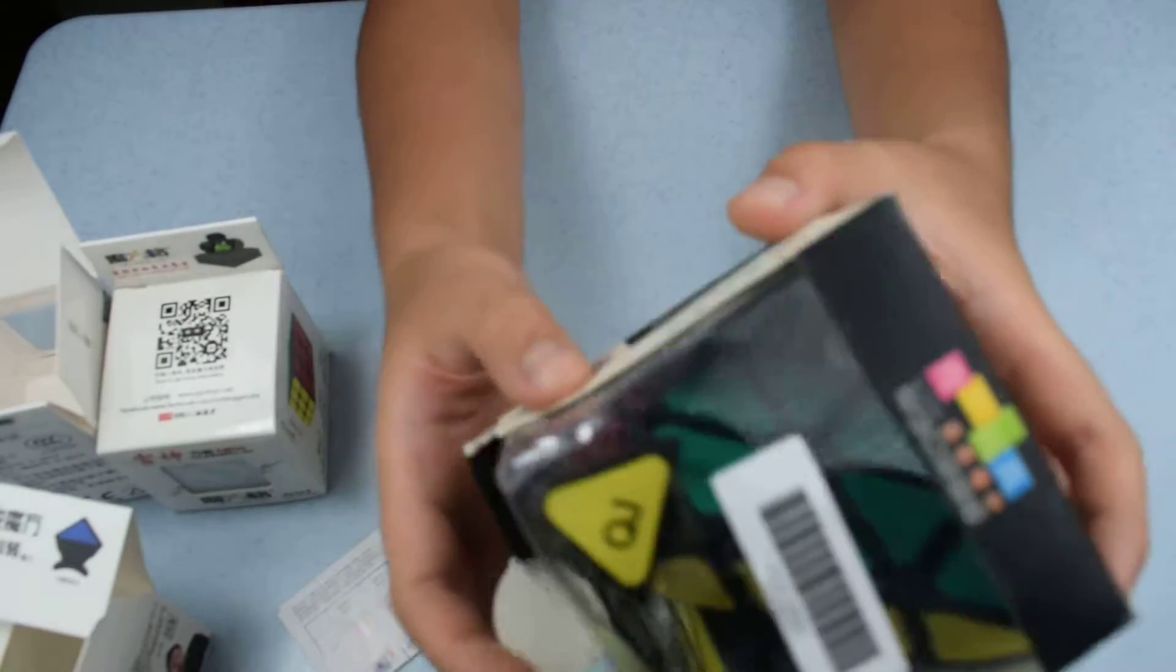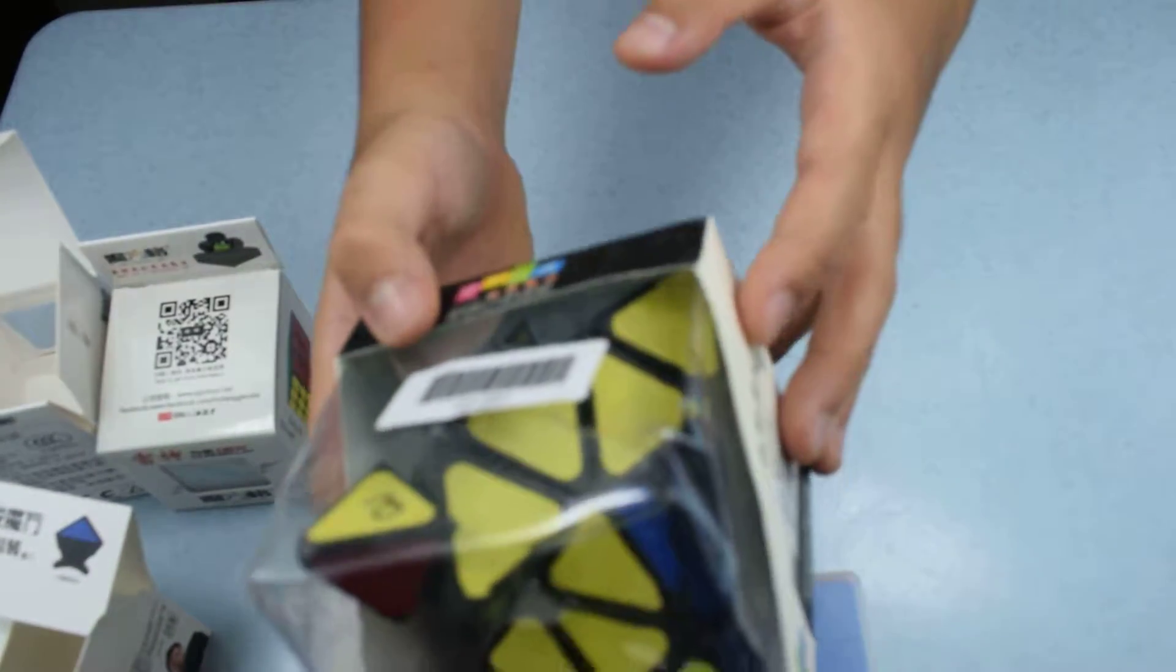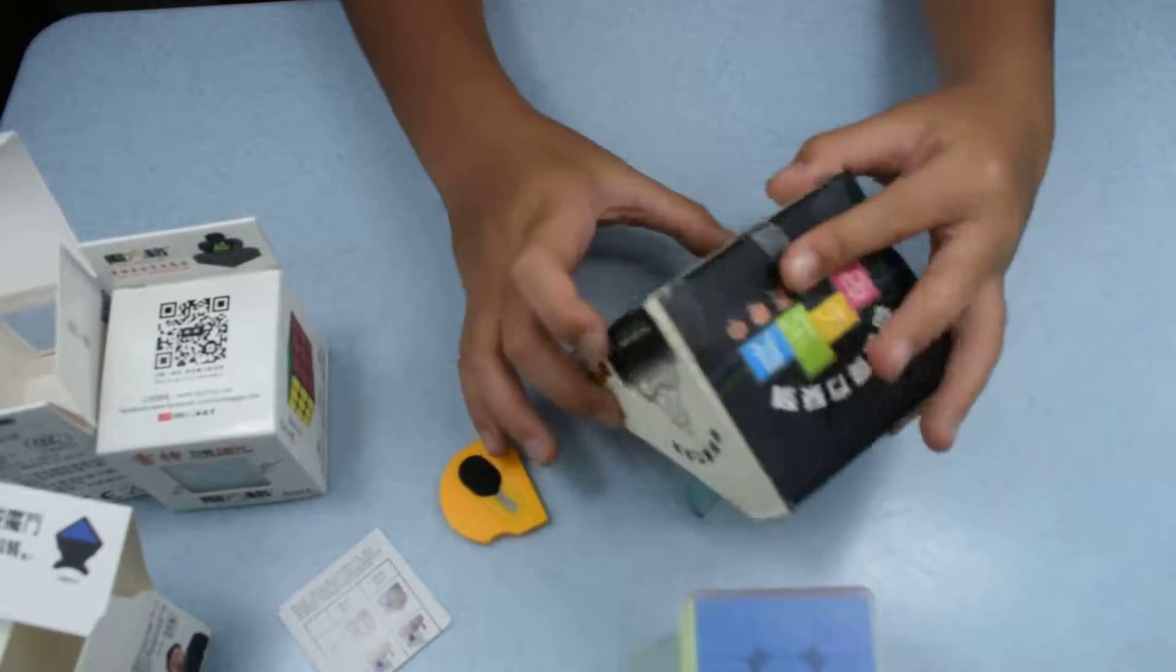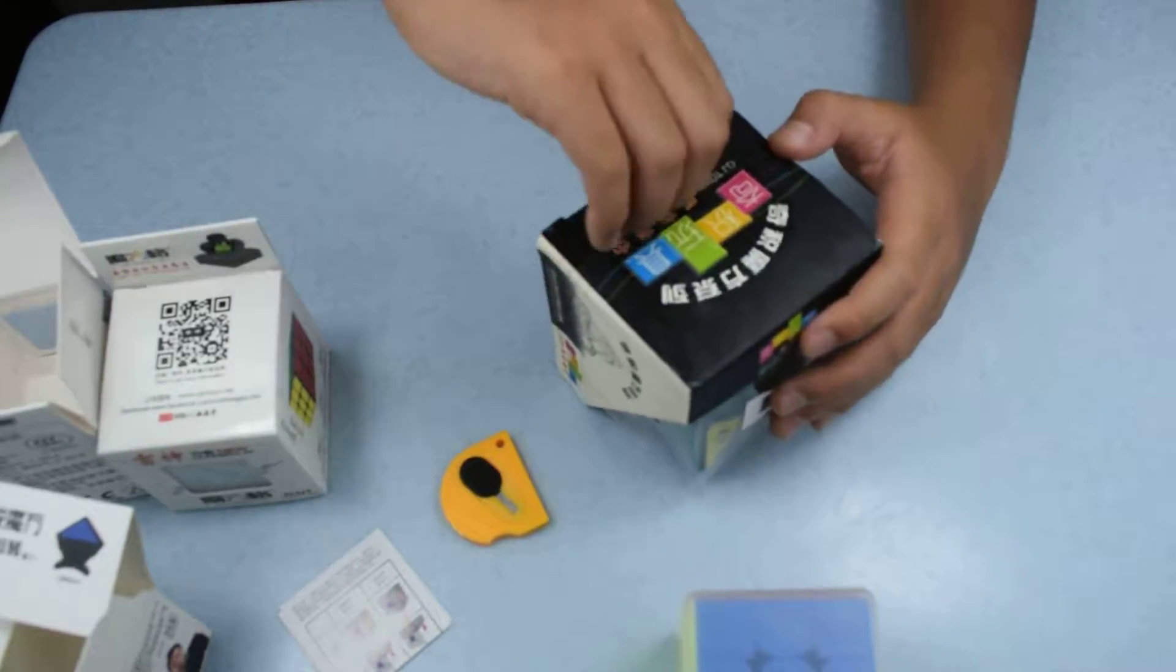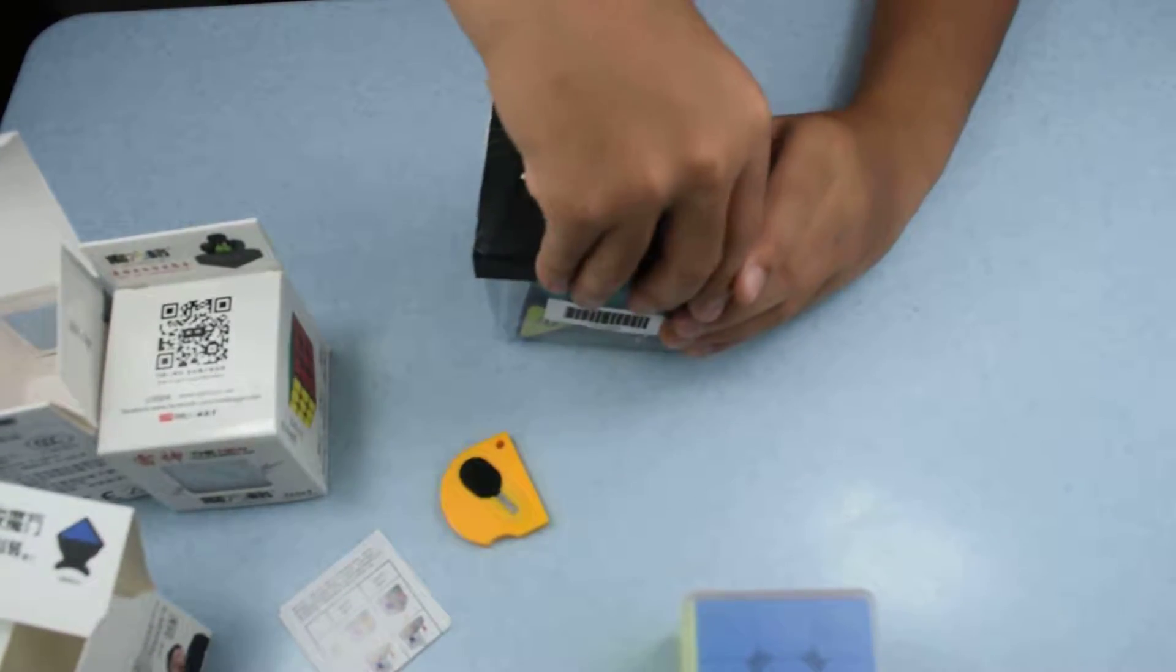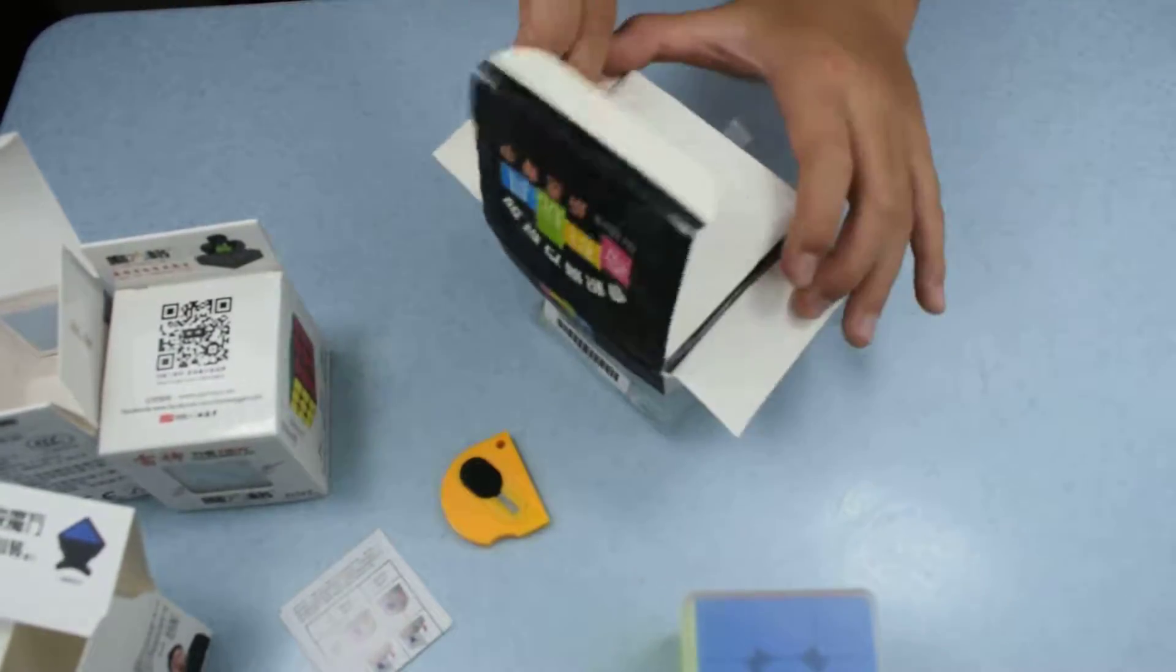Next is the QJ Pyraminx. So, the QJ Pyraminx is basically this. It's pretty big, by the way. So, let's open this. It's like this because of the shipping. It went by truck and plane.